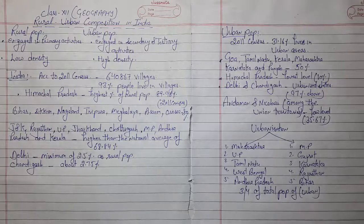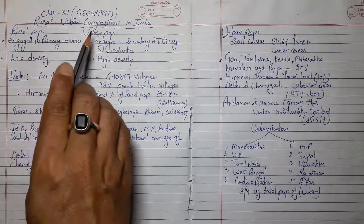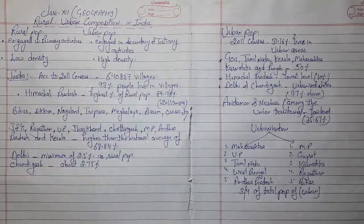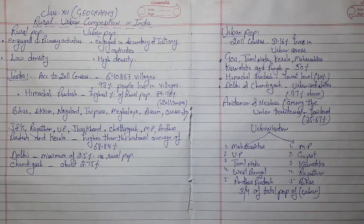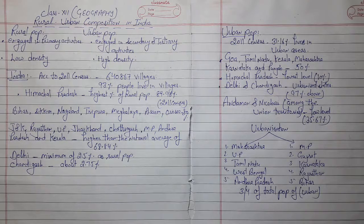Hello students, stay safe and healthy. Today our topic is Rural-Urban Composition in India. The population of any country is divided into urban and rural. This division is done on the basis of the place of residence. The population in the towns and cities is called the urban population, whereas that living in the villages is known as the rural population.